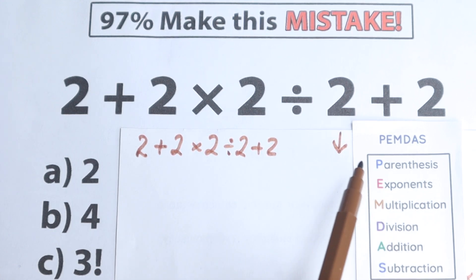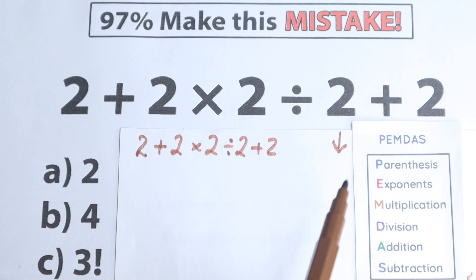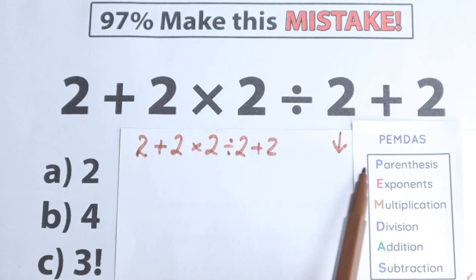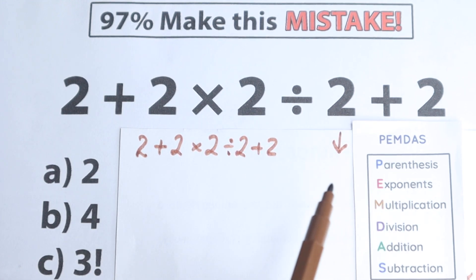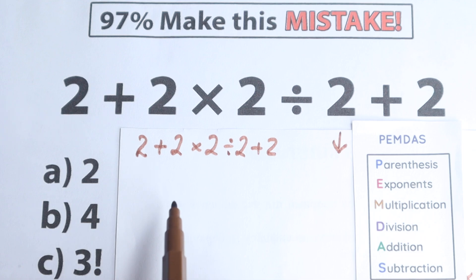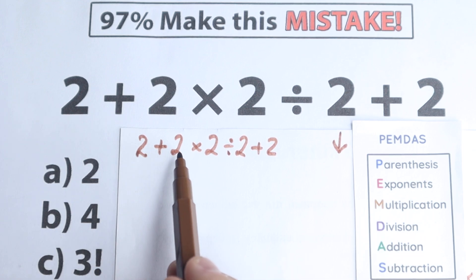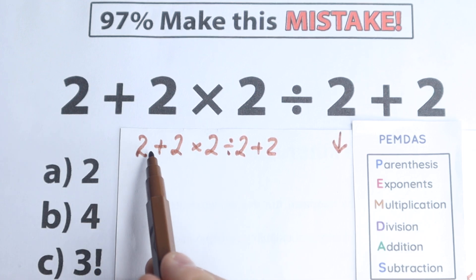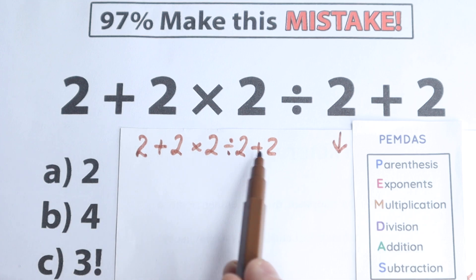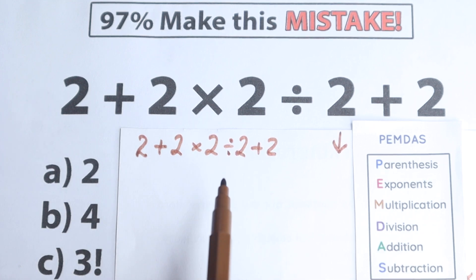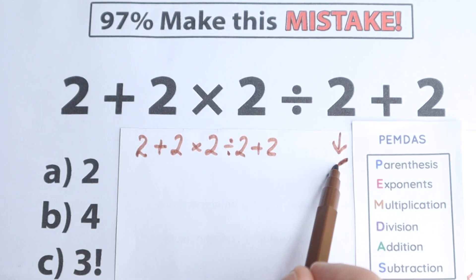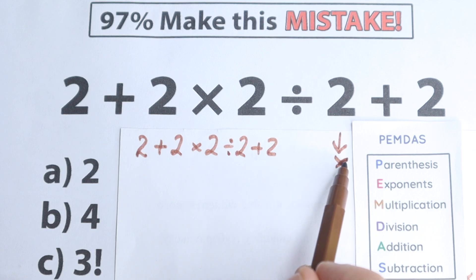PEMDAS — the first step is Parentheses, because the first letter is P. We need to scan where we have parentheses. Looking from left to right, we don't have any parentheses, so we can easily skip this step. With parentheses this question would be more complicated, but we don't have any.